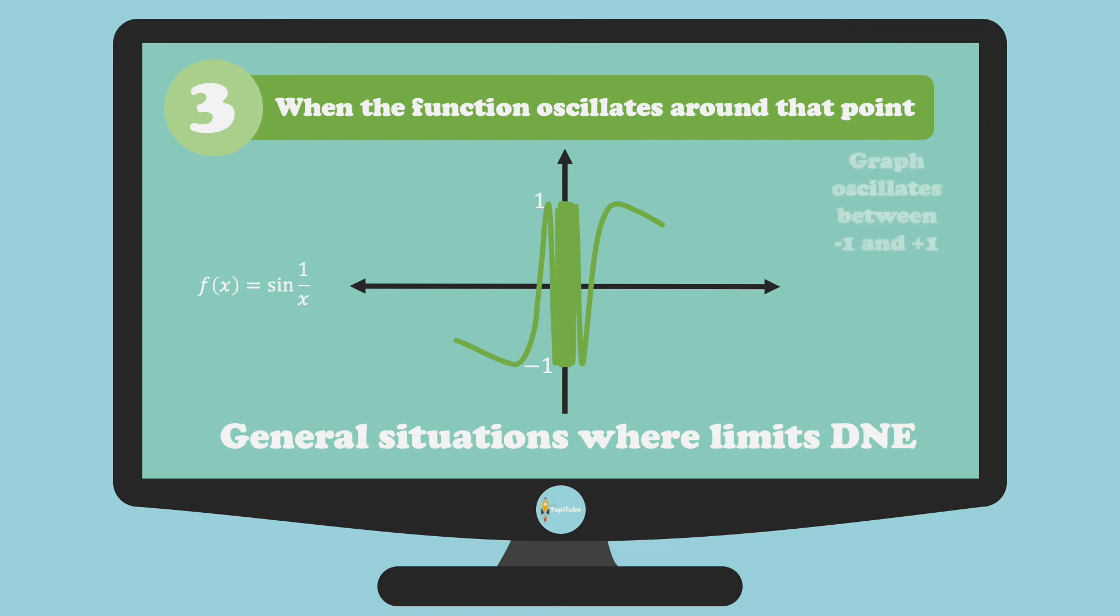Since the graph oscillates between the values of negative 1 and positive 1 and it does not stay close to any number, thus the limit of sin(1/x) as x approaches 0 does not exist.